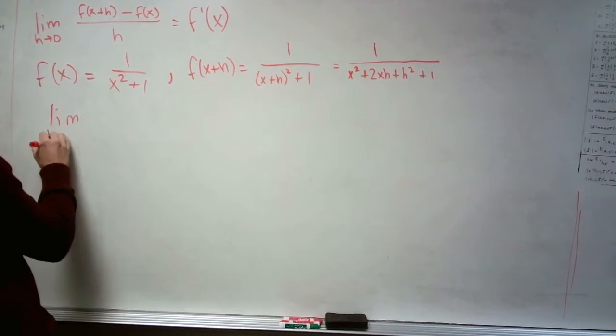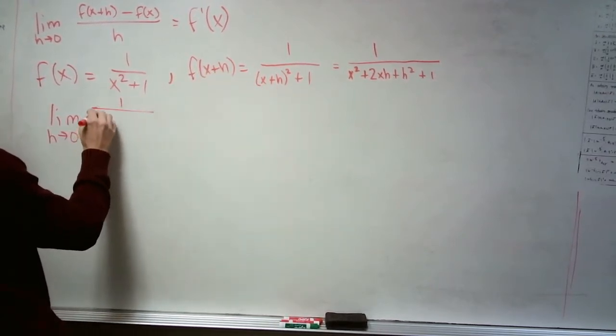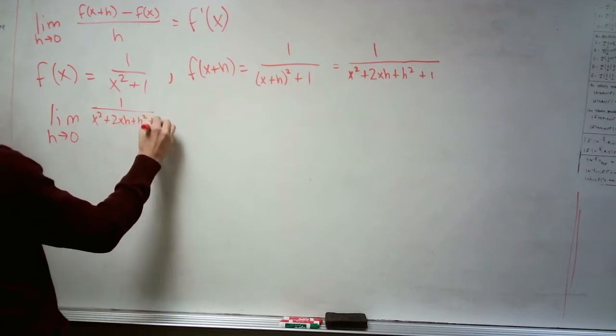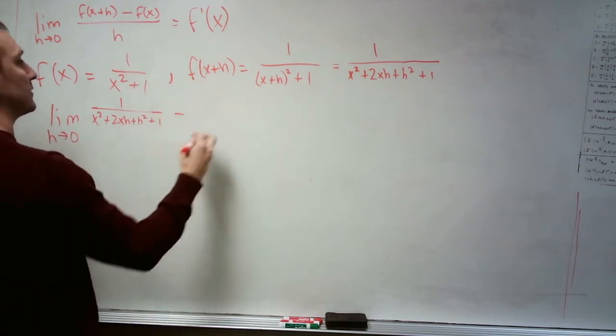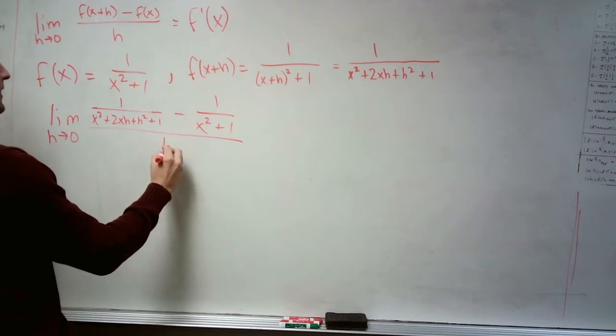So let's go. The limit as h goes to zero of f of x plus h, which is 1 over x squared plus 2xh plus h squared plus 1, minus f of x, which is 1 over x squared plus 1, all of this divided by h.